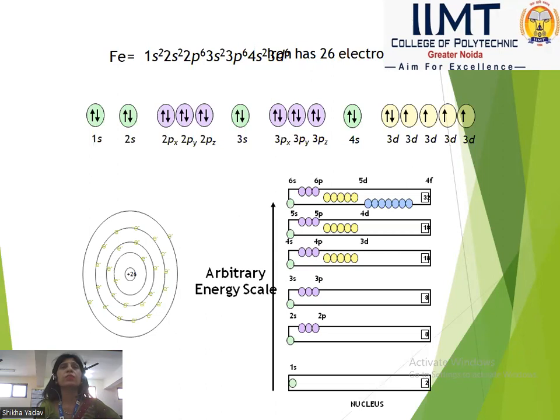The maximum number of electrons per shell is: first shell — 2, second — 8, third — 8, fourth — 18, fifth — 18, and sixth — 32. These are our energy levels.